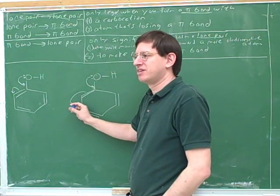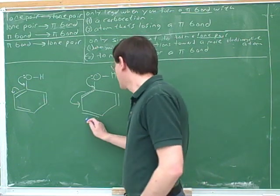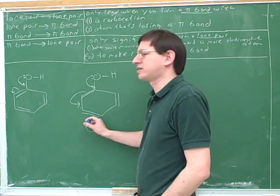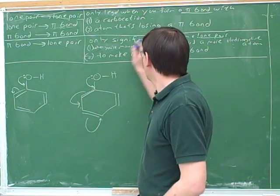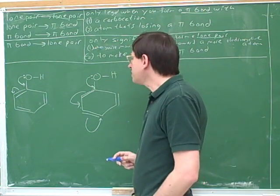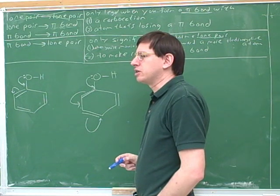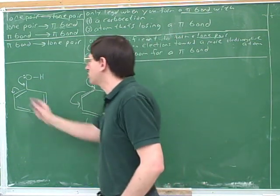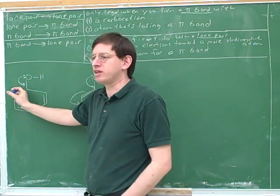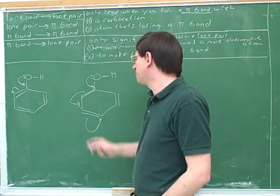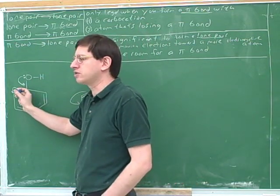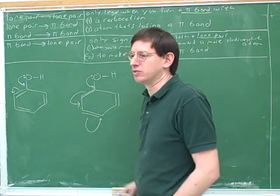Is this arrow acceptable by itself? No. But now we're making room for the pi bond coming in from behind, and that makes this arrow acceptable. Now we're forming a lone pair, and it's okay to form a lone pair to make room for a pi bond coming in from behind. Which of these would you usually draw? Normally you want to draw all the resonant structures, going in small steps so you don't miss anything. You should do the smaller step first, so you don't skip an intermediate resonance structure.